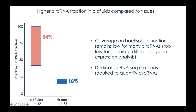When doing that in our biofluid atlas, it was interesting to see that the median circular RNA fraction in fluids was way higher than in tissues. This aligns with hypotheses in the circular RNA field that circular RNAs are more resistant to degradation by exonucleases and may therefore be more abundant relative to their linear counterparts in fluids. However, even with RNA capture sequencing, you're still limited to backsplice junction reads, which are quite low in number, so more dedicated technologies are required.